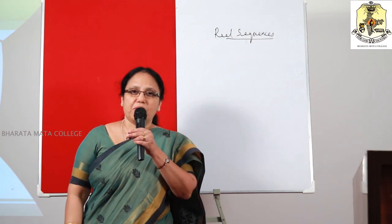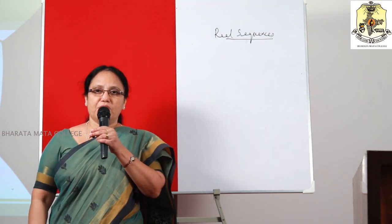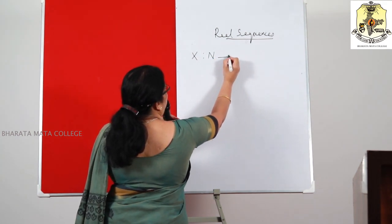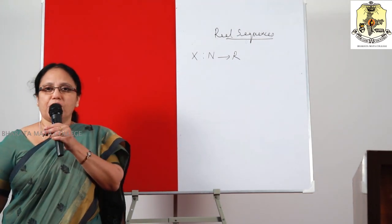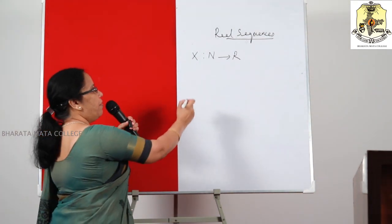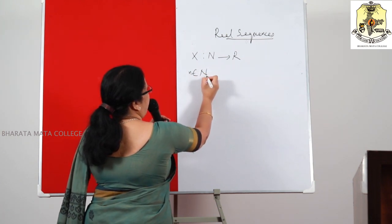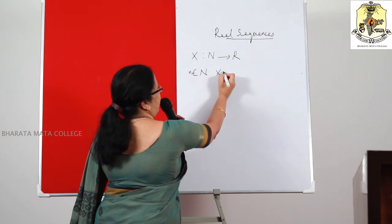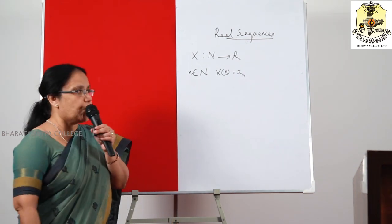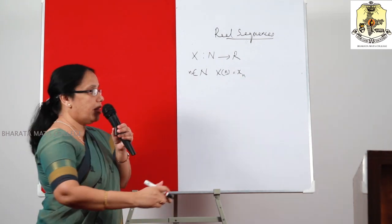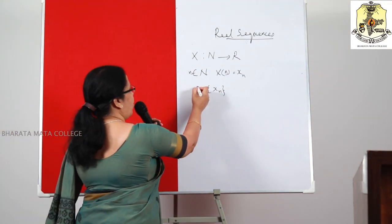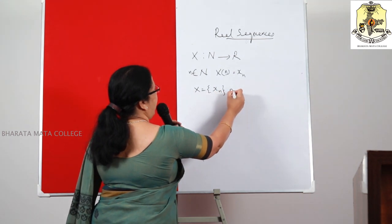What is a real sequence? It is a function defined from the set of natural numbers N. So it is a function X defined from N to the set of real numbers R, which means N is the domain of X and R is the co-domain of X. So that for every N belonging to N, the value of X at N is denoted as X of N, which is equal to X subscript N, which is a real number. For every N, we get a real number X_N, and the set of all terms X_N we call a sequence, denoted as X = {X_N}, N belonging to N.